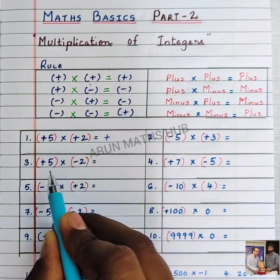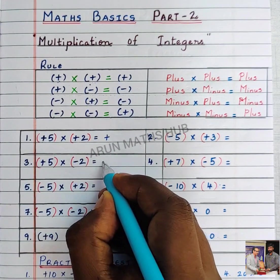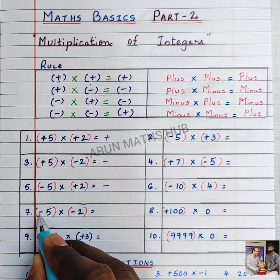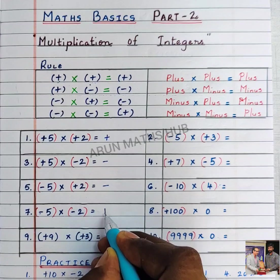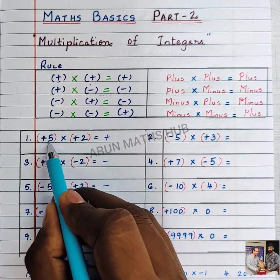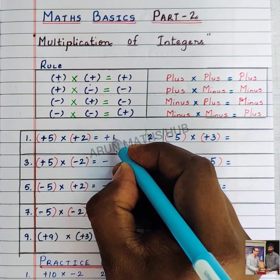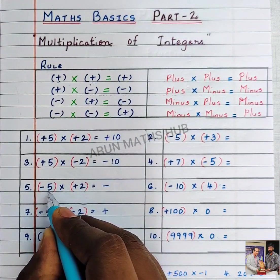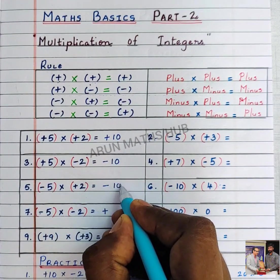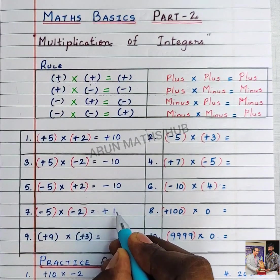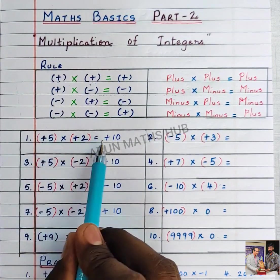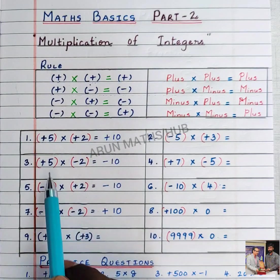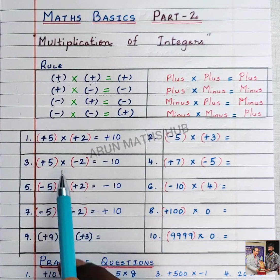Next, plus into minus is minus. Minus into plus is minus. Minus into minus is plus. Five twos are ten — plus into plus is plus. Five times two is ten. Plus into minus is minus; five twos are ten.